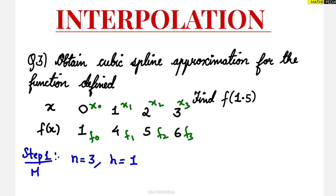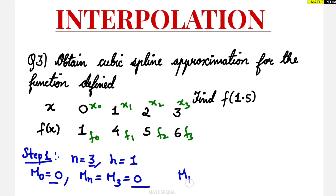The next step is to define the boundary conditions. We set M0 equal to 0 as the initial approximation, and M3 equal to 0 as the ending value. M0 is the starting value and M3 is the ending value. The values in between, M1 and M2, are unknown and we need to find them.